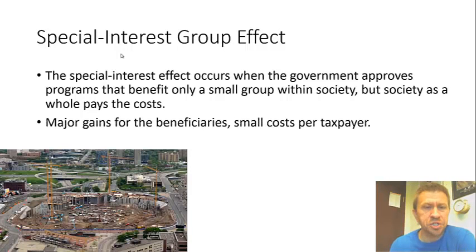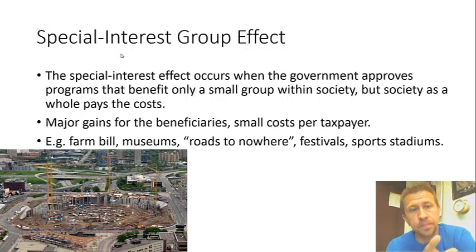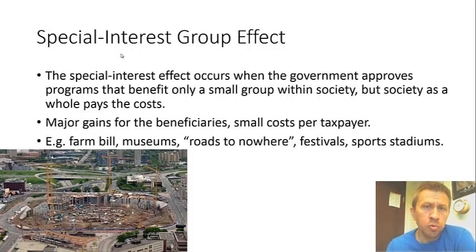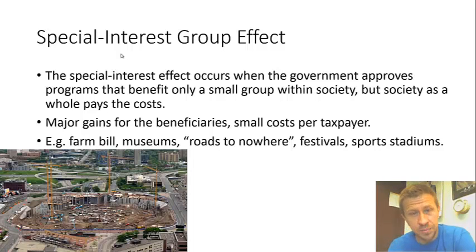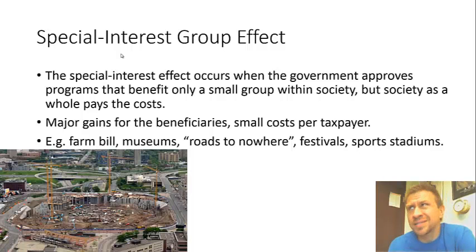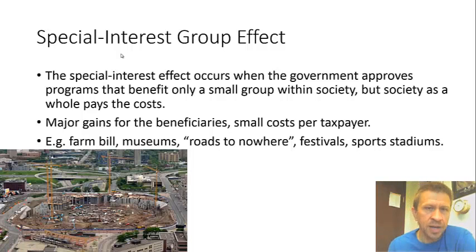The second example is the special interest group effect. Special interest groups are defined as a small group that has a huge interest in some particular entity. Because of that, there's a lot of benefit for them to have a particular government action taken, and they can often donate a lot of money to politicians to help get these particular actions passed. The average person might not want it, but it's such a small deal to the average person that it's not really worth their time to complain about it. In the scheme of issues, it's small, so they're not even going to bother with it.